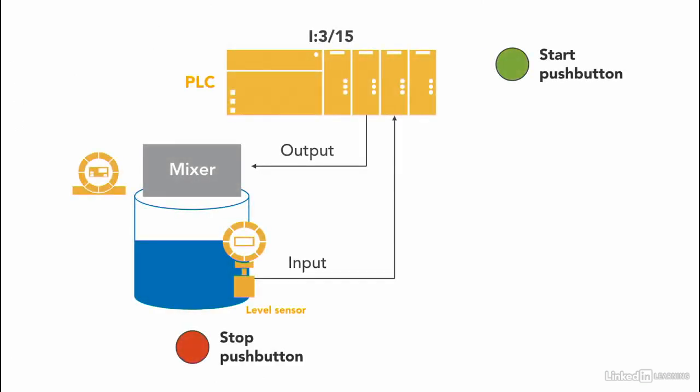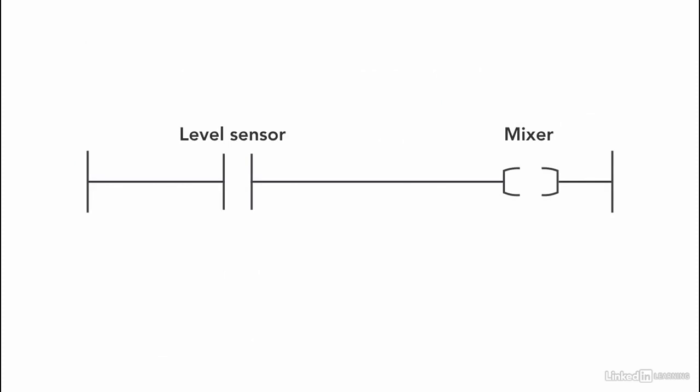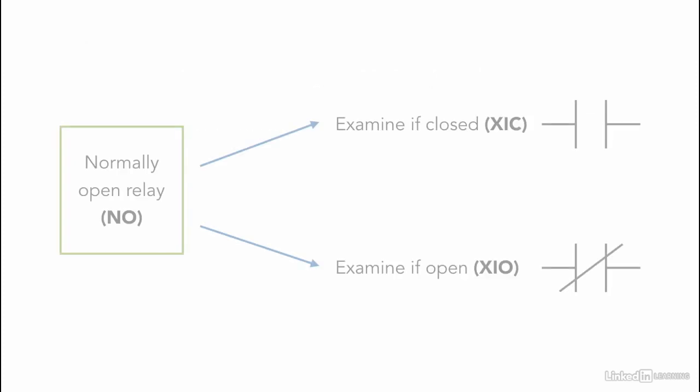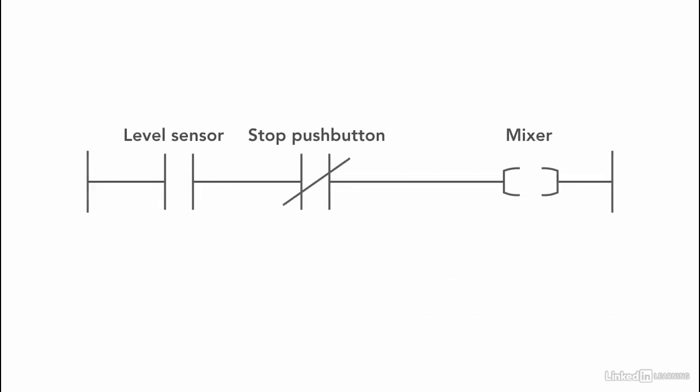The last thing, the mixer stops when the stop pushbutton is pressed. Remember that the stop pushbutton is a normally closed contact. Because I want the mixer to stop once we press on the stop pushbutton, I need to add the stop pushbutton in this rung. And since it's a normally open relay, I'm going to use an examine if open instruction. So now as soon as the stop pushbutton is pressed, the instruction is not activated anymore and the mixer stops.